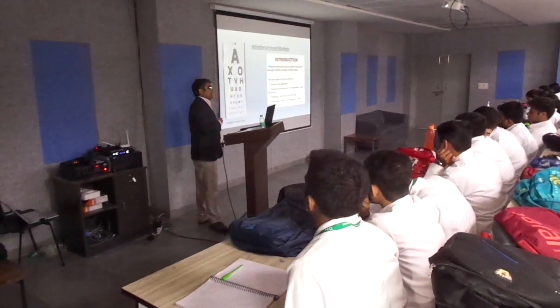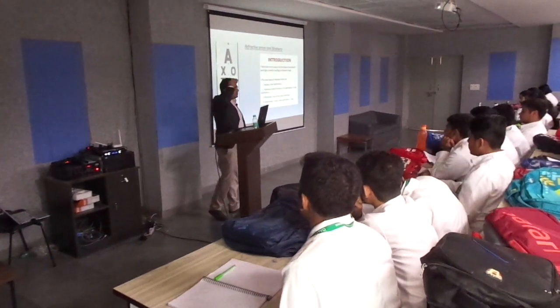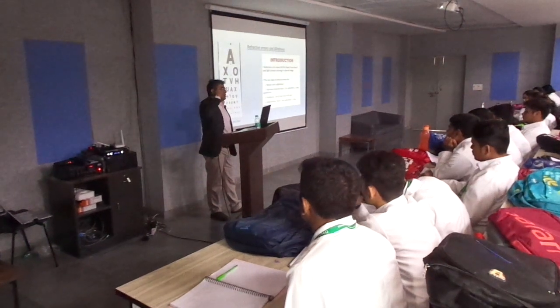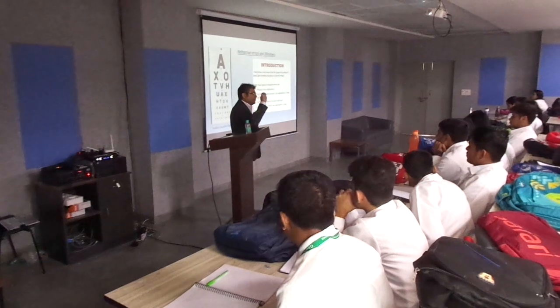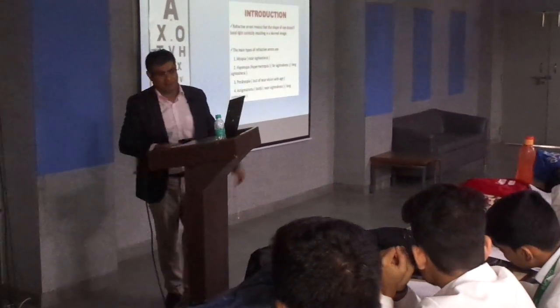Uske baad eek cheese hothi hai, astigmatism. Bas ye word hiyaad kar lo. Isme basically cornea ke doh curves hote hai, eek oopar se niche aur eek horizontal, thik hai? Agar in curves pei thoda sa relation teek nahi hai, to light sahih tariqe se focus ni ho tha and this is called astigmatism. Isko detail pe baad teak karegai.